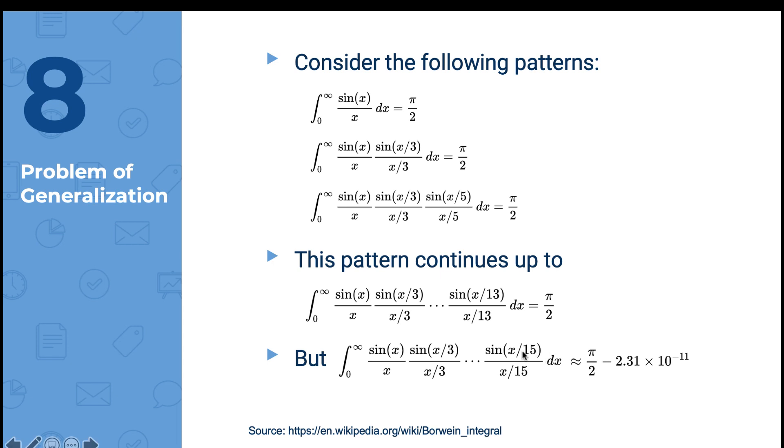However, when this odd number is 15, the answer is a bit less than pi over 2. Therefore, if we try to generalize results from previous input, there may be mistakes at the end.